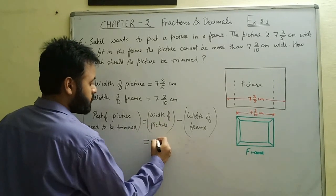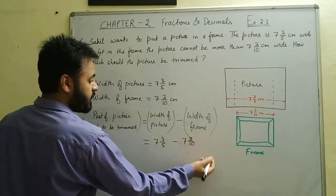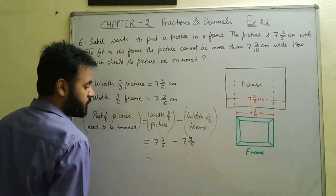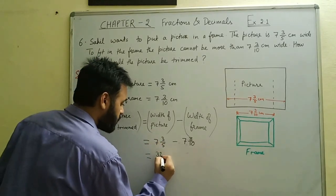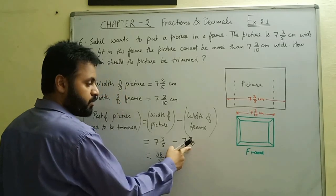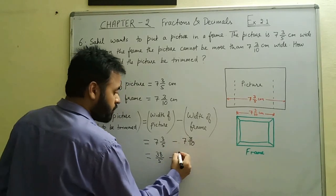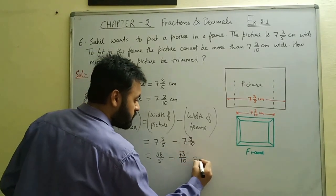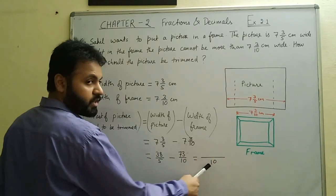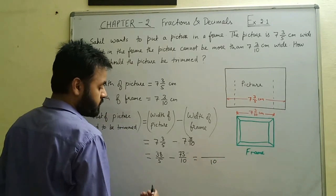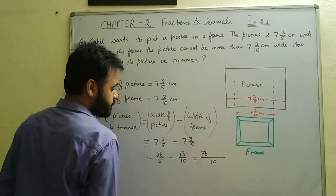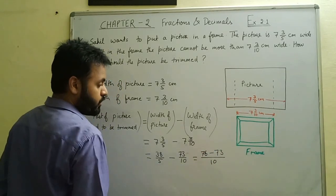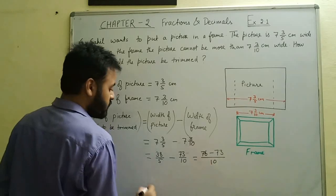Width of picture is 7⅗ = 38/5, and width of frame is 7 3/10 = 73/10. Taking LCM of 5 and 10, which is 10: 10 ÷ 5 = 2, and 2 × 38 = 76. Minus 73 (since 10 ÷ 10 = 1, and 1 × 73 = 73). So 76 − 73 = 3/10 cm.